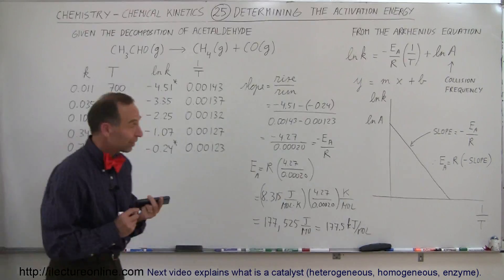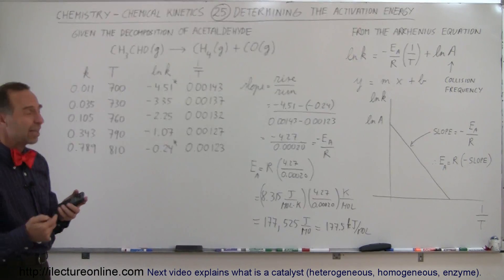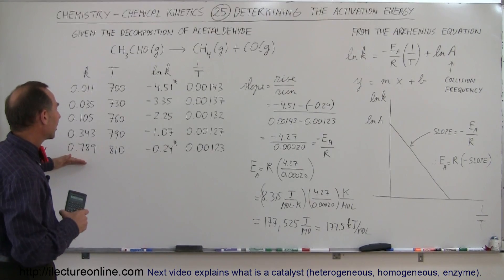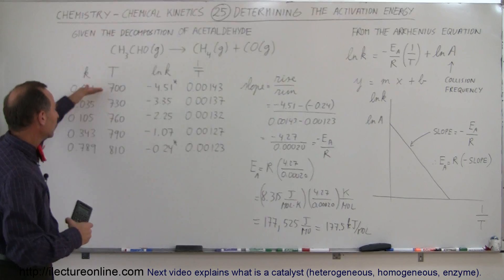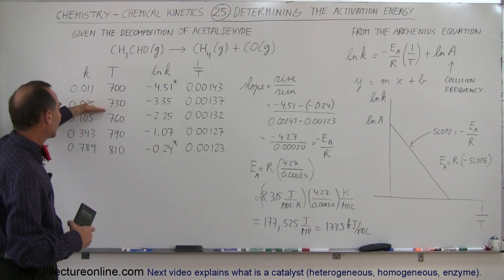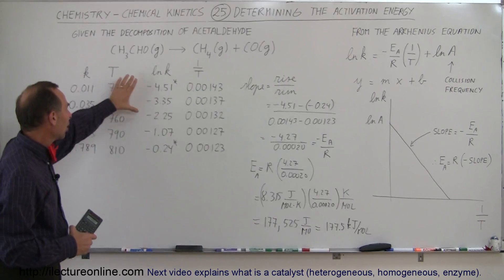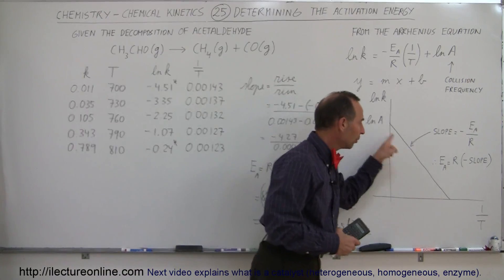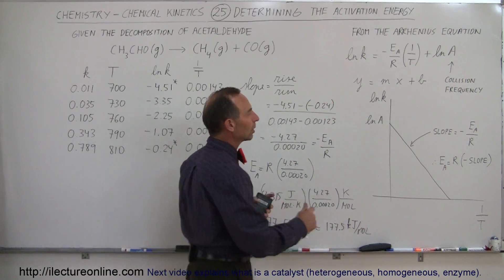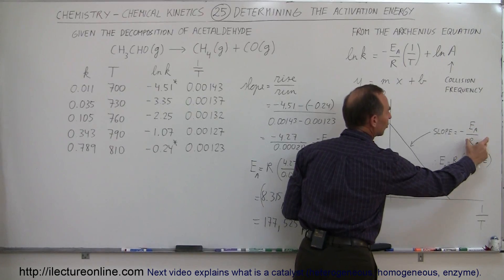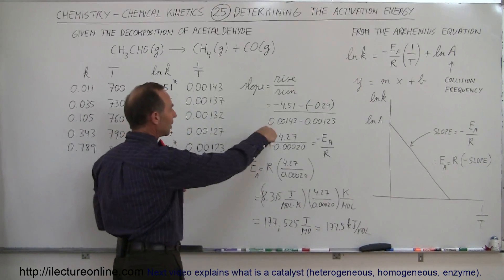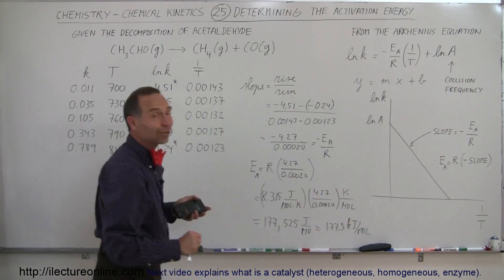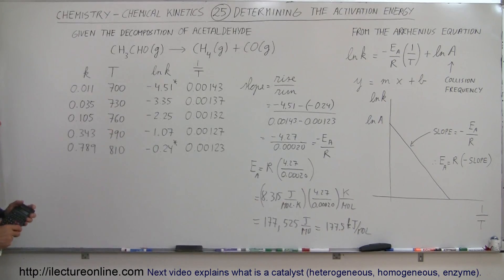That is actually a pretty interesting way to find the activation energy. Of course you can't just do that via a theoretical equation — you have to read in the rate constant as you're watching the reaction, measure the temperatures, and see how the rate of the reaction changes with temperature. You take the natural log of the reaction rate constant, take the inverse of the temperature, find the slope of that equation, knowing the slope equals the negative of the activation energy divided by the gas constant. Then you set that equal to the activation energy times the gas constant and there you get the result. A pretty slick method, and it's very effective.